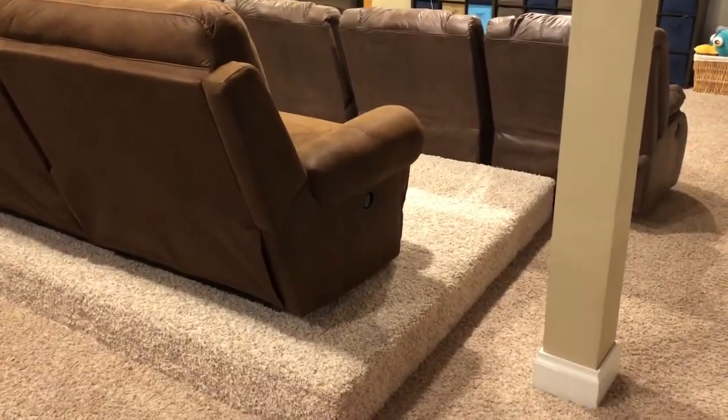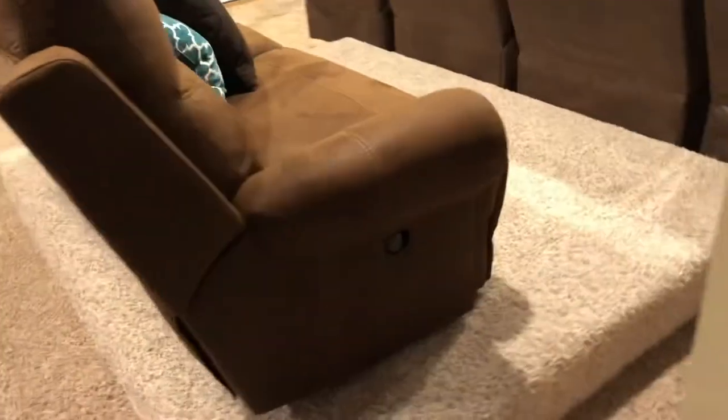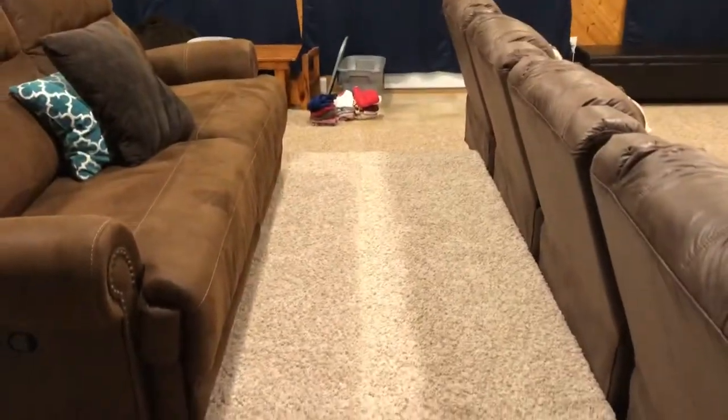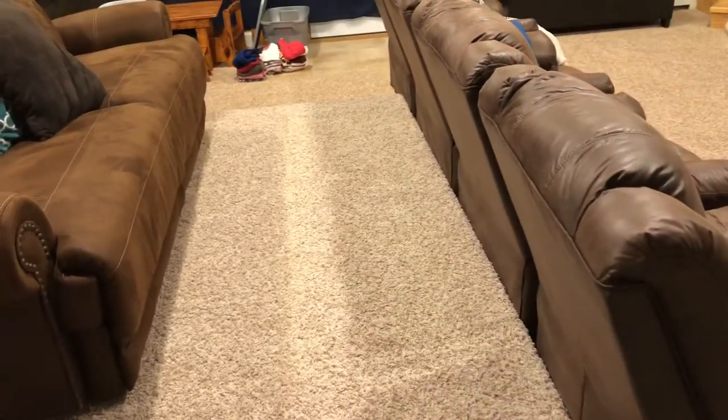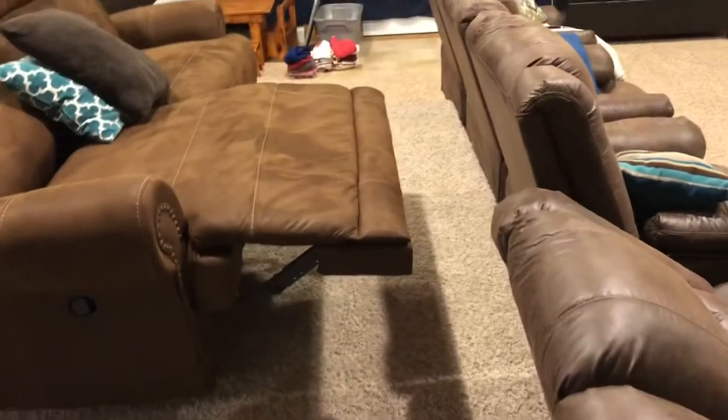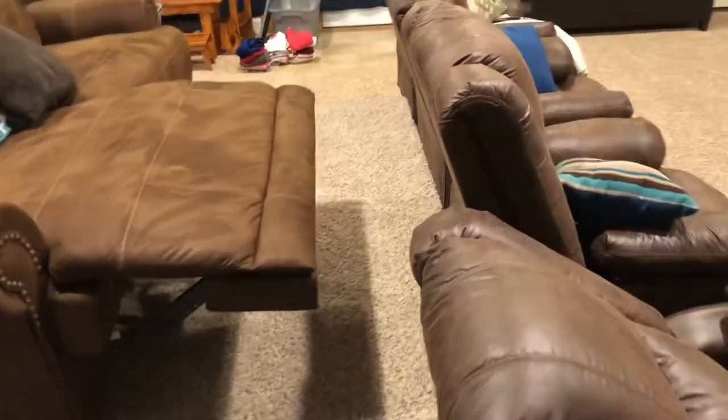So here's the theater platform completed and outfitted with furniture finally. Per the design, there's some room here for people to walk through and for reclining to work out without any conflict of feet and heads. I can show that here. We designed there to be a small space when someone's reclined here and when someone is reclined here. As you can see there, that's no problem. So it worked out as we designed it. It's now ready to be used as a theater.